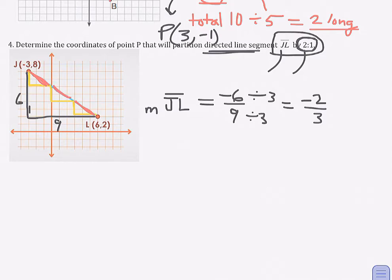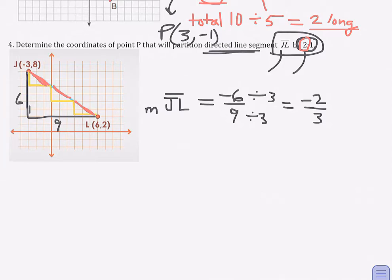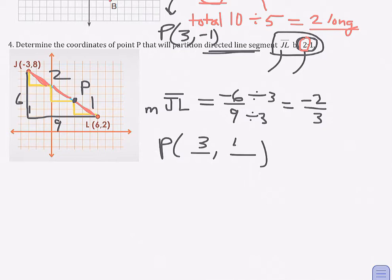Now we just have to give two of those segments to J. The point we're going to use to break the segment up in a ratio of two to one would be right there at point P. Now we just have to give the coordinates — the coordinates are three comma four.